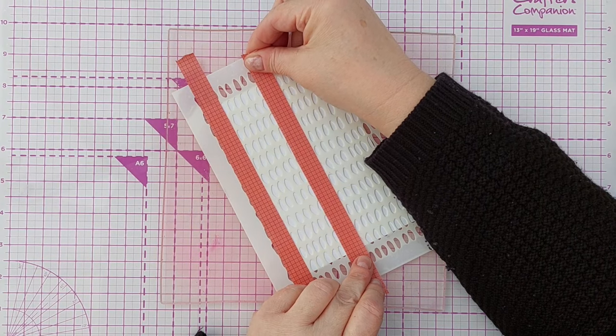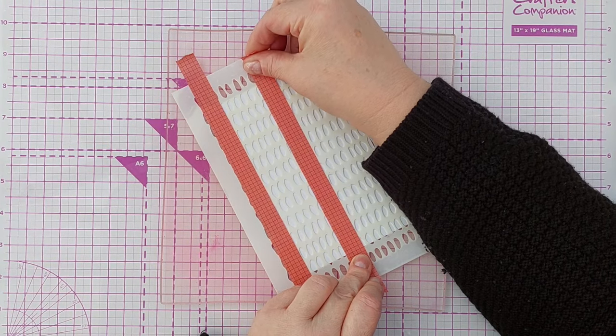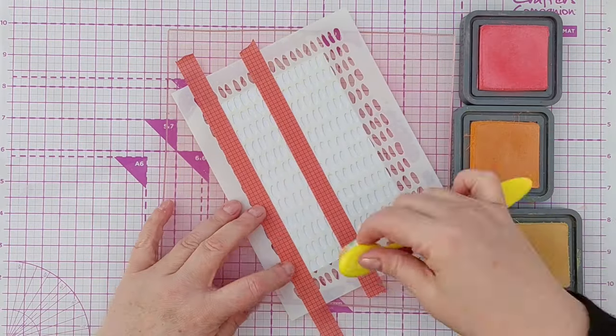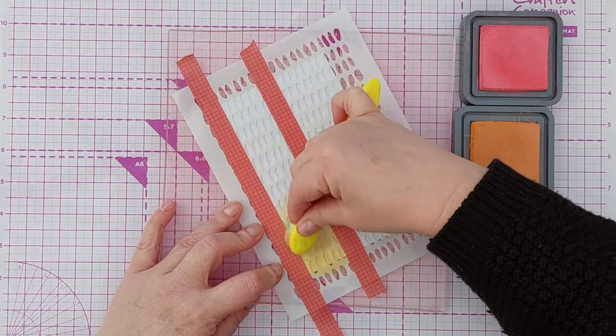So I'm masking off my strip with some spare washi tape and I'm using distress oxides to create an ombre down my card.